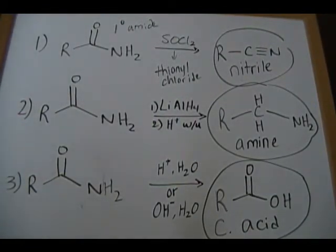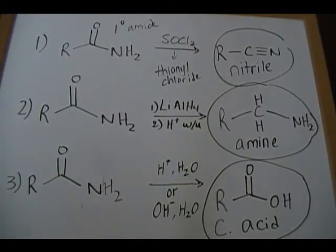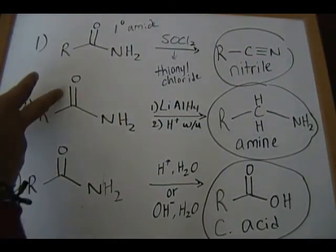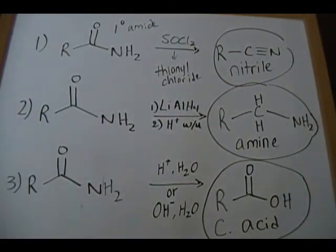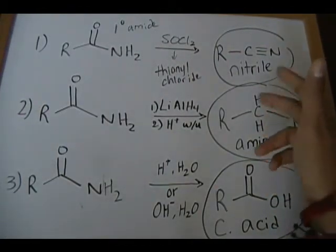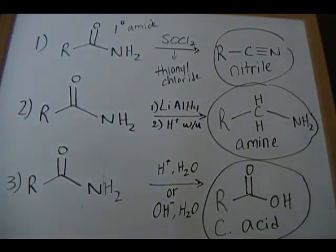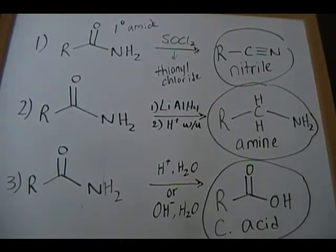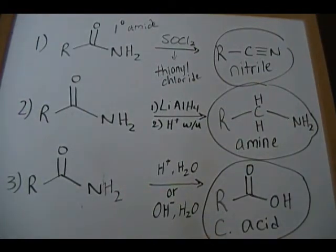Second reaction: an amide — no specification, could be primary, secondary, or tertiary — reacted with lithium aluminum hydride (a reducing agent) with a proton source in the second step, gives an amine. To draw the product, get rid of the double-bonded oxygen and replace it with two H's. Third reaction: an amide under acidic or basic conditions in the presence of water gives a carboxylic acid — replace the NH₂ with an OH group.